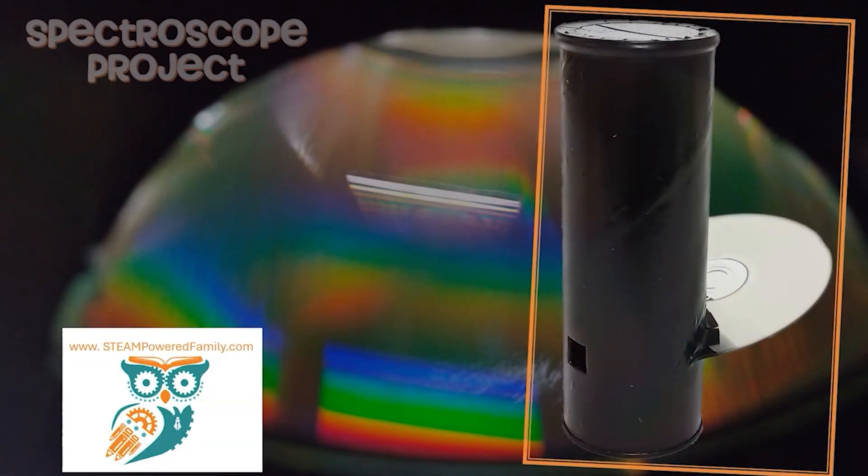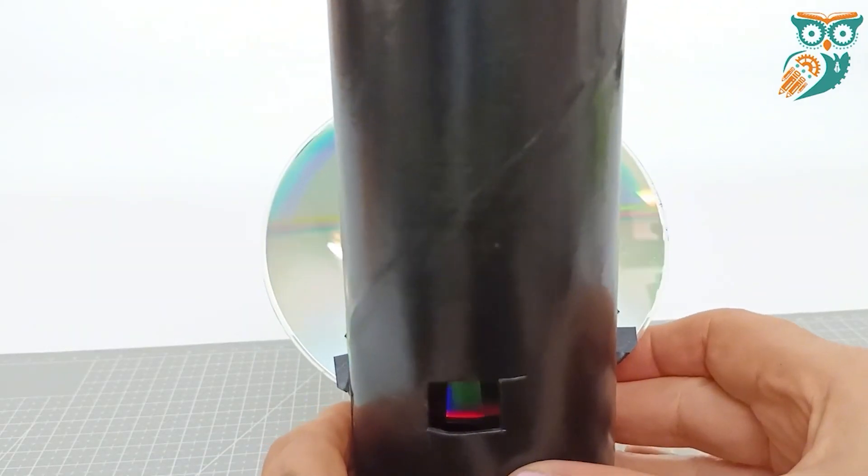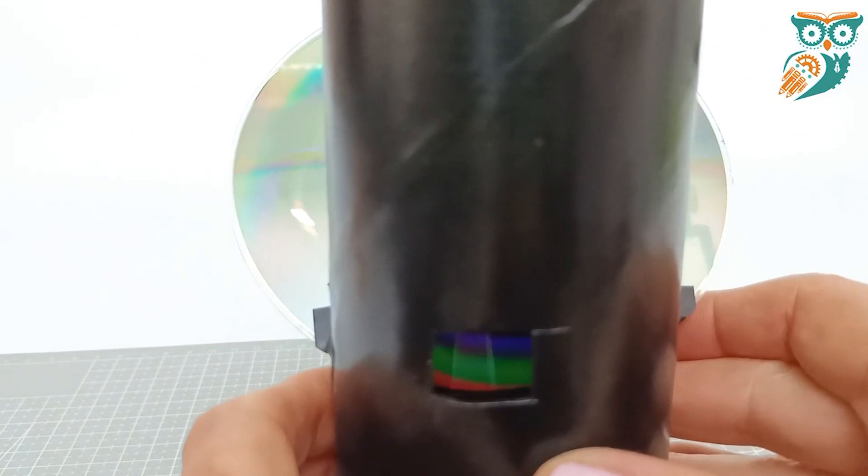Hi and welcome to Steampowered Family. Today we're doing a spectroscope project. A spectroscope is a really cool little scientific device that helps us decode light so that we can see the different colors.